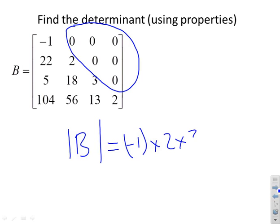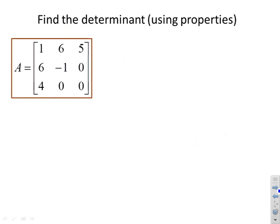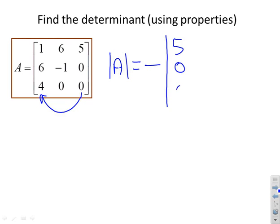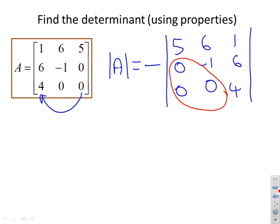This one's a bit trickier because it looks like it might be upper or lower triangular but it's not because of where the zeros are. I can use the column rule — I'm going to swap the first and third columns, so the determinant of A is going to be equal to minus the determinant, because swapping columns introduces a minus sign. Column three becomes five, zero, zero; column two stays as it was; and column one becomes one, six, four. Now this new matrix is clearly triangular, and therefore the determinant of A is minus five times minus one times four.